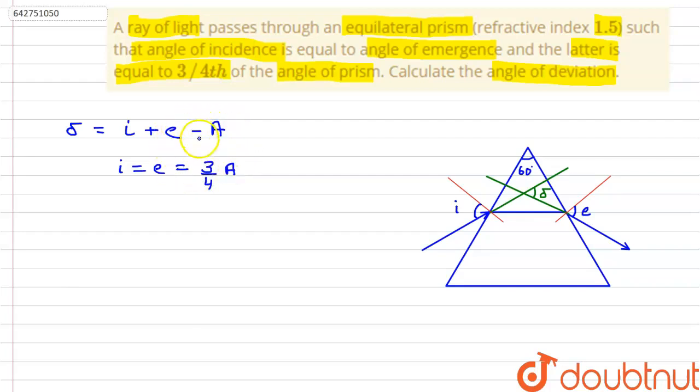Therefore, substituting all these values in the equation, we can rewrite this equation as delta equals 3/4 a plus 3/4 a minus a.